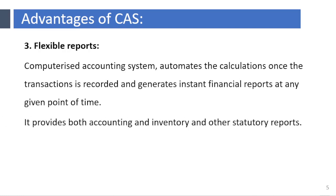Flexible Reports. The reporting is flexible in a computerized accounting system compared to a manual accounting system. The reports of a manual accounting system reveal balances of accounts on a periodic basis, while a computerized accounting system automates the calculations once transactions are recorded and generates instant financial reports at any given point of time. It provides both accounting and inventory and other statutory reports.